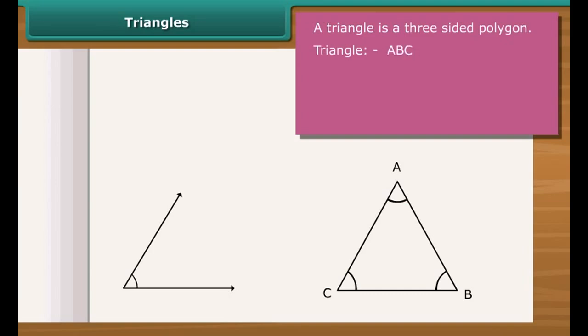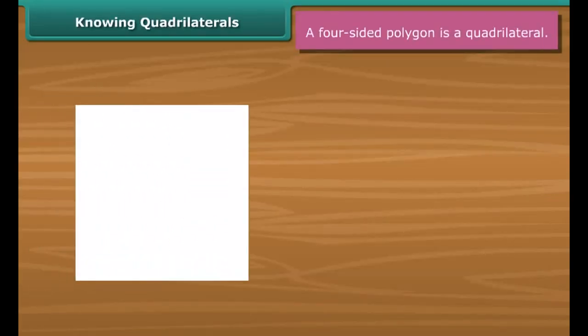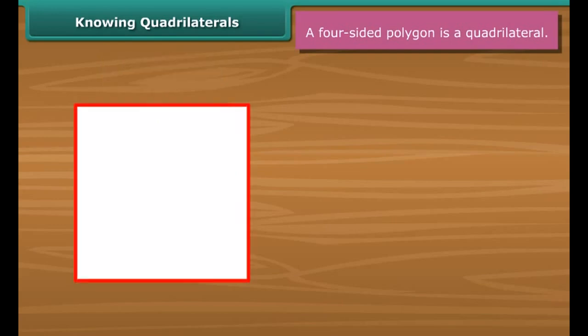A triangle has three sides, three vertices, and three angles. In the given figure ABC is a triangle. AB, BC, and CA are three sides. A, B, and C are three vertices. Three angles are angle CAB, angle ABC, and angle BCA.